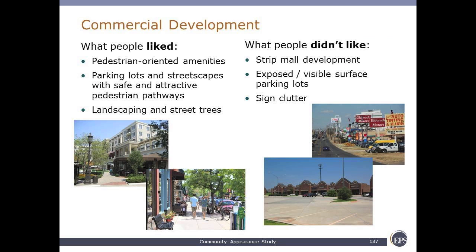For commercial development, what people liked includes pedestrian-oriented amenities, parking lots and streetscapes that are safe with attractive pedestrian ways — where the pedestrian fits within the image is a huge attribute in terms of positive or negative results — and landscaping and street trees as big differentiators. What people don't like: strip mall development, exposed visible parking lots, and sign clutter. The simplicity and coherence available to users along a commercial strip makes a big difference for overall viability and ultimately the amount of sales tax revenue generated by the city.